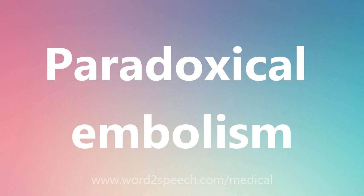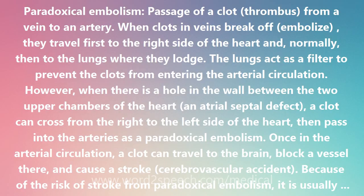Paradoxical Embolism: the passage of a clot thrombus from a vein to an artery. When clots in veins break off as emboli, they travel first to the right side of the heart and normally then to the lungs where they lodge. The lungs act as a filter to prevent the clots from entering the arterial circulation.